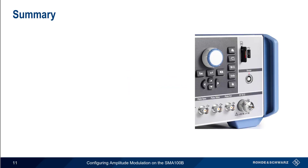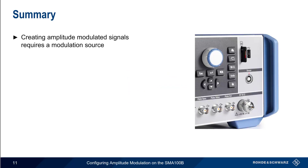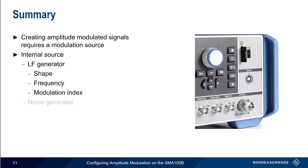In summary, to create an amplitude modulated signal we need a modulation source. Internal sources include the SMA's internal LF generator, which can produce standard waveforms like sine, pulse, triangle, etc. In this case, we generally need to specify the shape of the modulating signal, the modulation frequency, and the modulation index. Another internal source is the noise generator, which can create AM signals with wider sidebands, more closely approximating the spectrum of AM signals modulated by human speech or other broader band signals — in which case we specify the bandwidth of the noise. The SMA also supports external modulation sources via two BNC connectors.